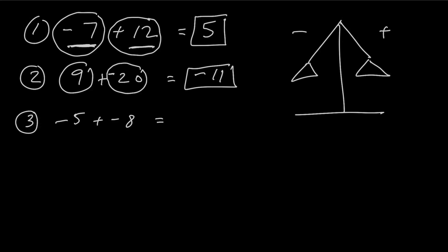For number 3, we've got negative 5 plus negative 8 — did you get negative 13? You can think of it as walking backwards 5 steps, then walking backwards another 8 steps. In total, you've walked backwards 13 steps: negative 13. So if you're adding two negative numbers together, you just add the two numbers and it's going to be negative. The trickier ones are when one is positive and one is negative — you have to see which one you have more of.